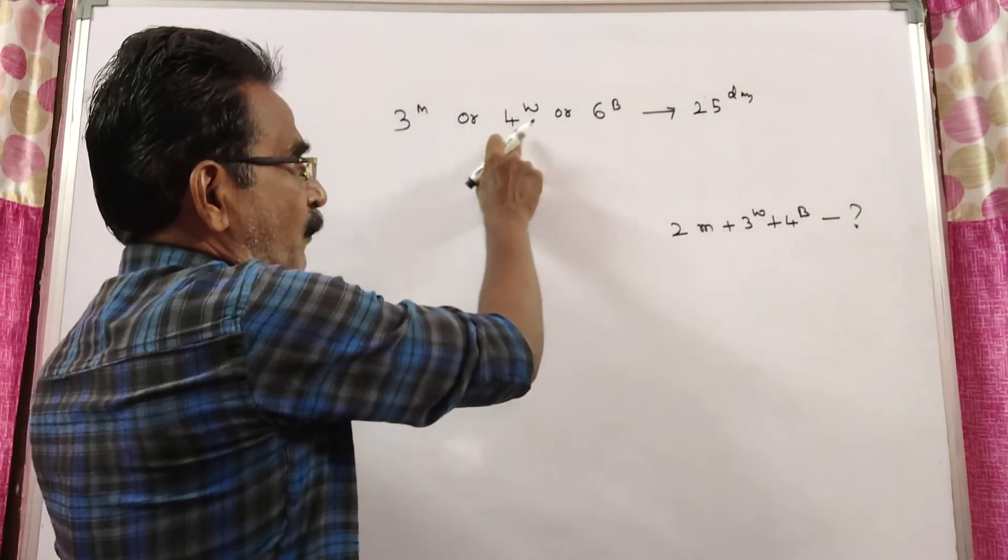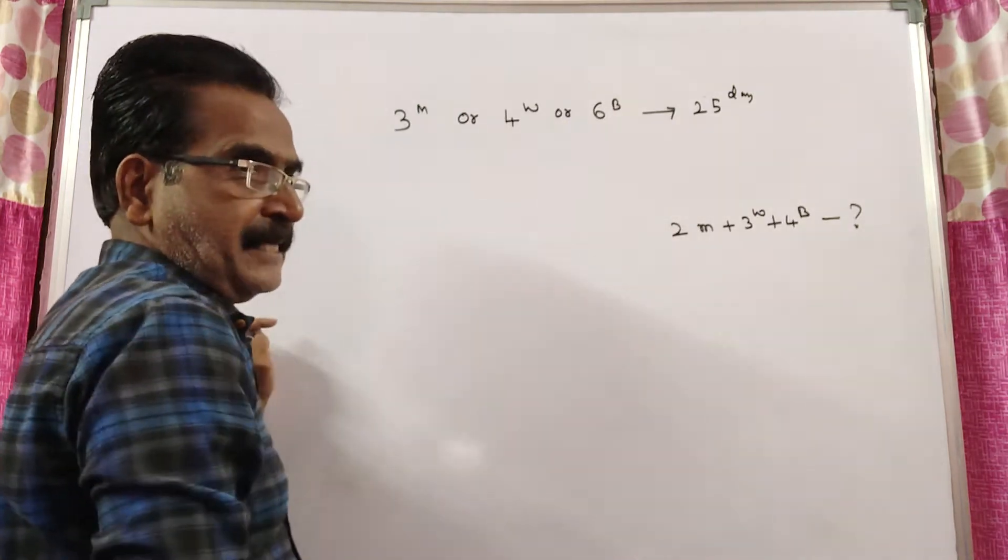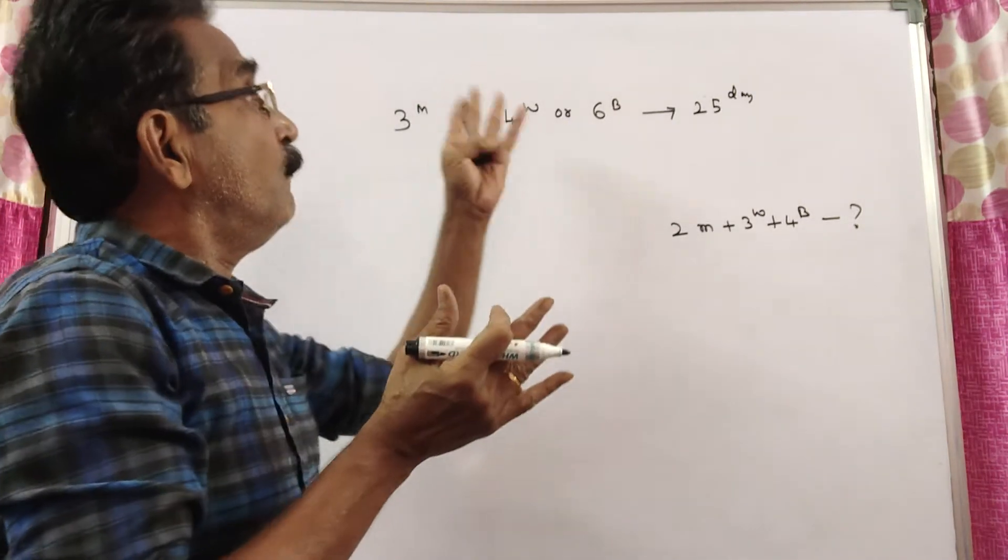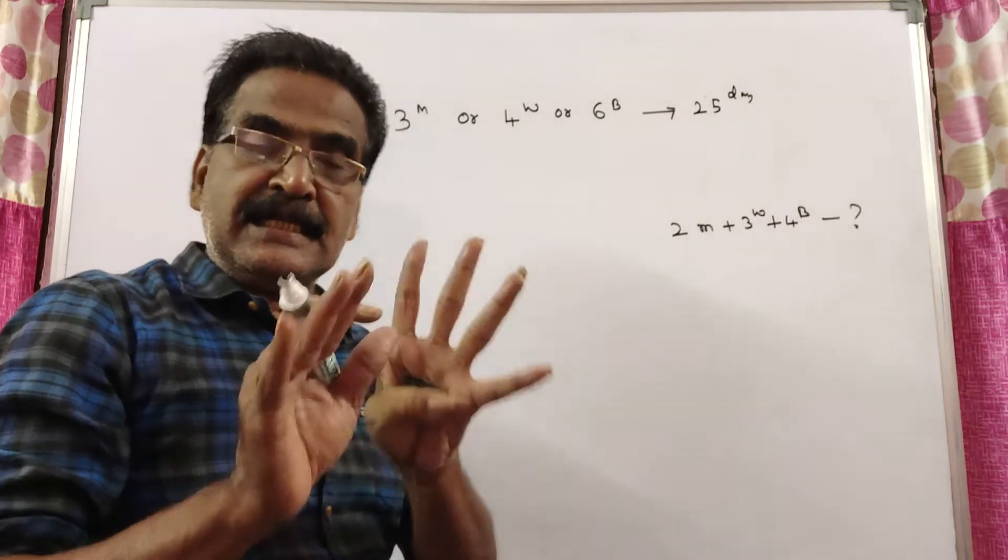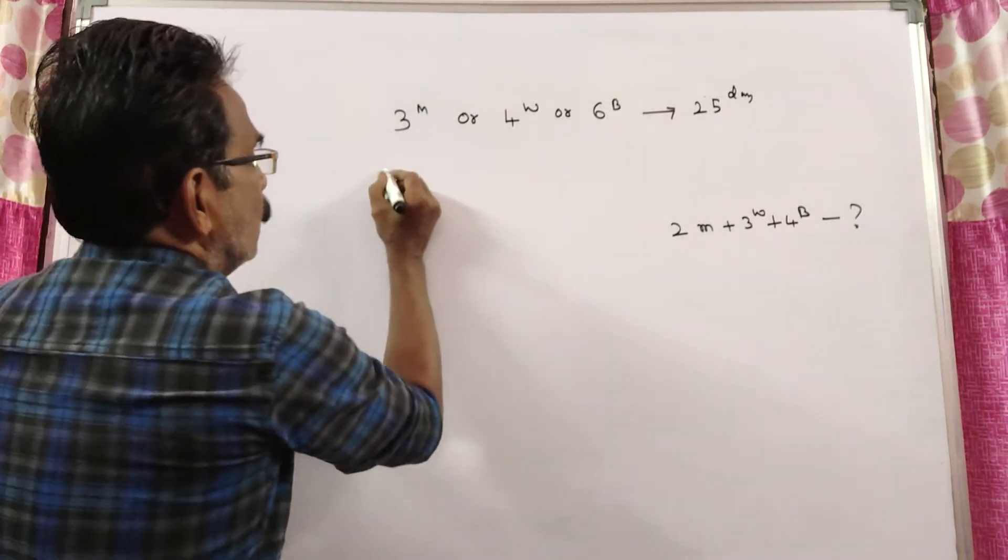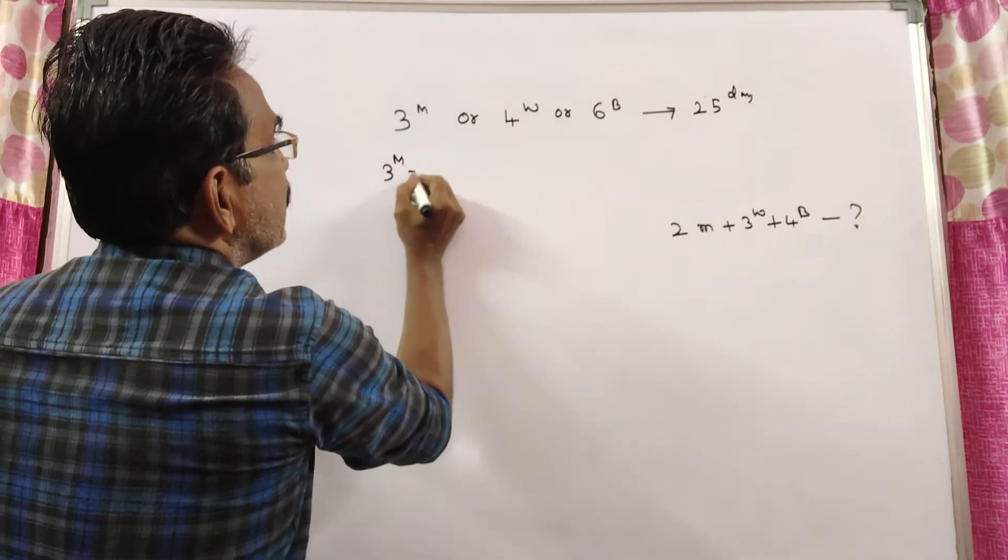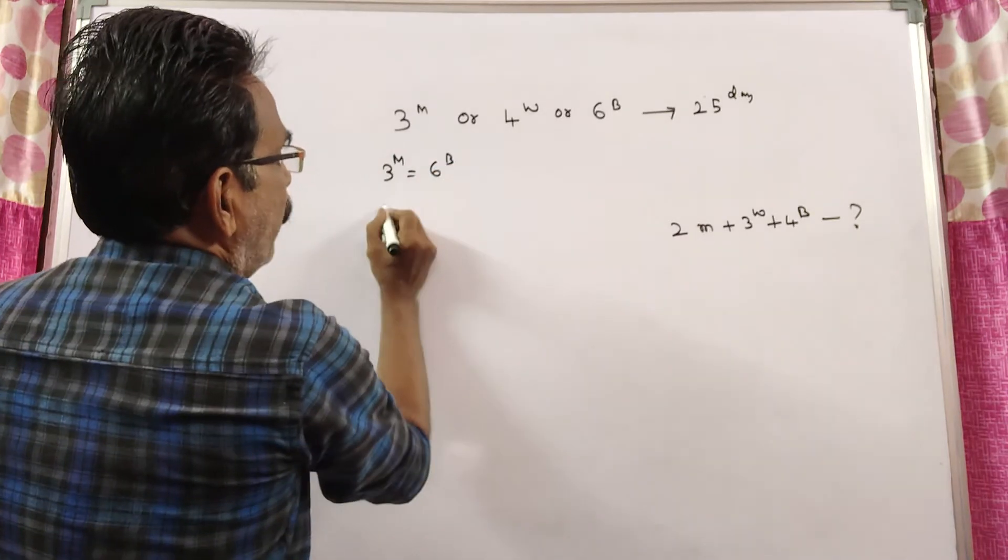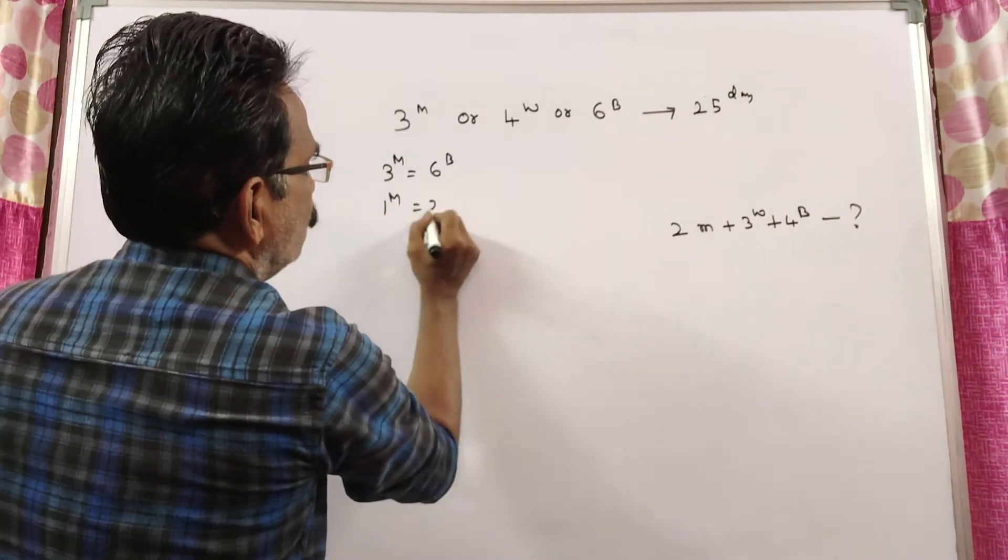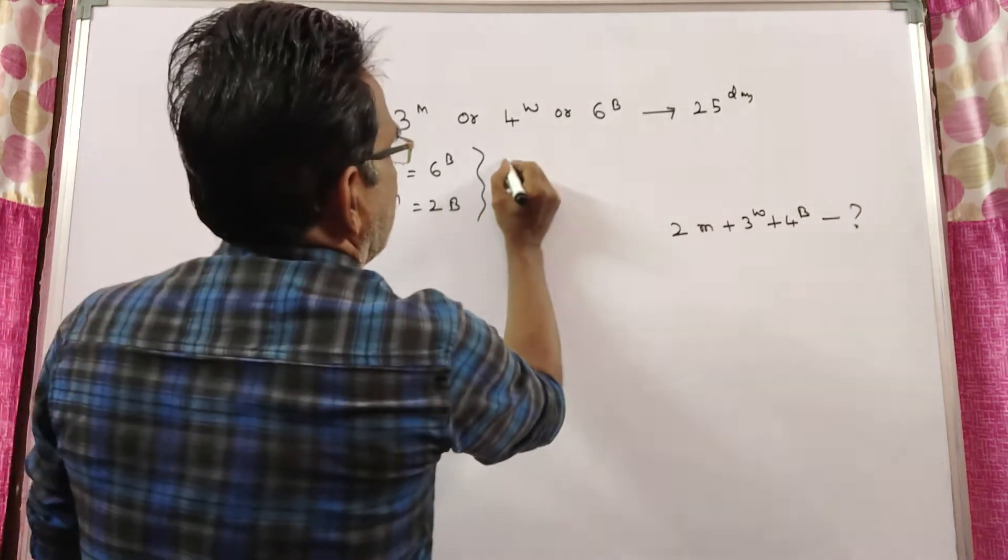Friends, 3 men or 4 women or 6 boys means the capacity of 3 men, 4 women and 6 boys are equal. So, 3 men is equal to 6 boys. 1 man is equal to 2 boys. 1 man capacity is equal to 2 boys.